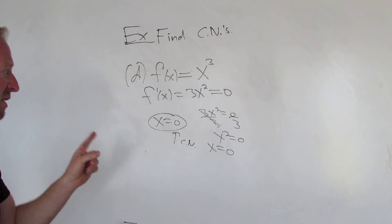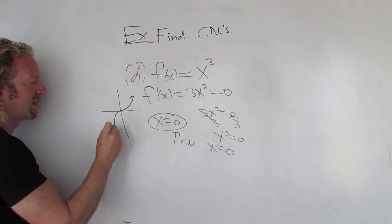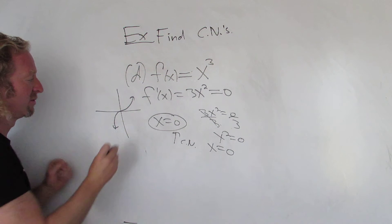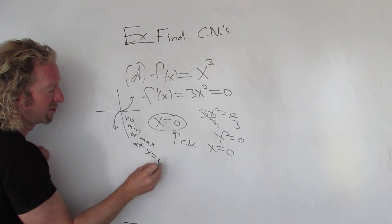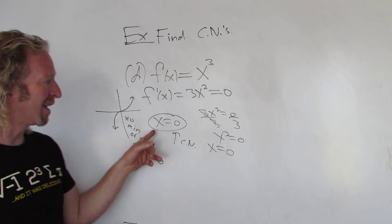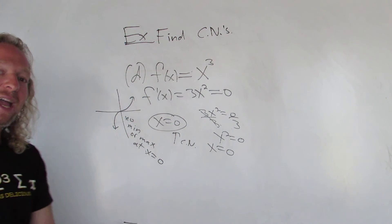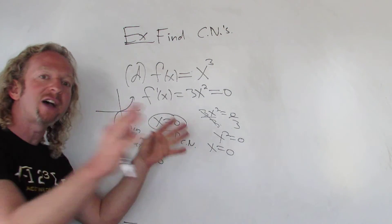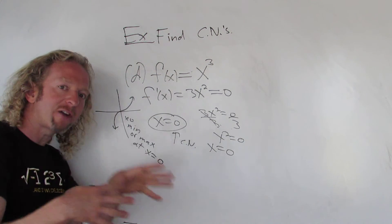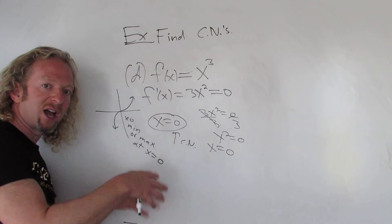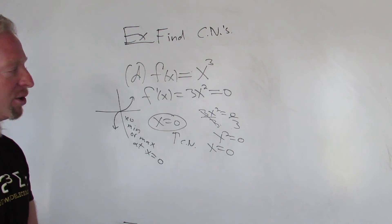This is an interesting example because if you look at the graph of x cubed, there's no relative maximum or minimum at x equals zero. So this is an example of a function that has a critical number but does not have a relative max or min. The implication only goes one way: if you have a relative max or min, then you have a critical number — but having a critical number does not mean you have a max or min.